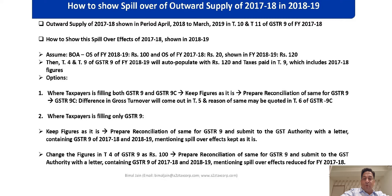Good afternoon friends. This video is captured in continuation of hand-holding for filing GSTR 9 and 9C for financial year 2018-19. There may be a case where you have shown FY 17-18 outward supply in the period April 18 to March 19, which gets auto-populated when we are finalizing GSTR 9 of financial year 2018-19.